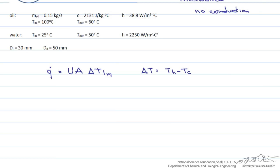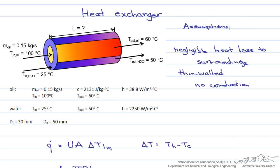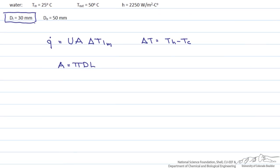Now we're going to rewrite the equation in terms of what we're looking for, L. The area is equal to pi times D times L. Looking at our picture, since heat exchange is occurring at the inner tube, we use the inside diameter of 30 millimeters. So L equals the heat transfer rate divided by the overall heat transfer coefficient times pi times the diameter times the log mean temperature difference.